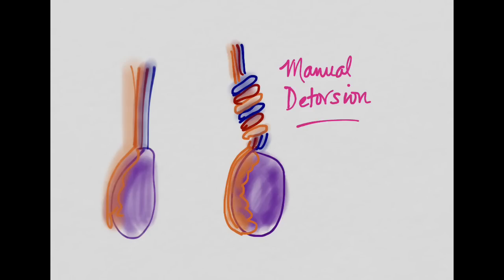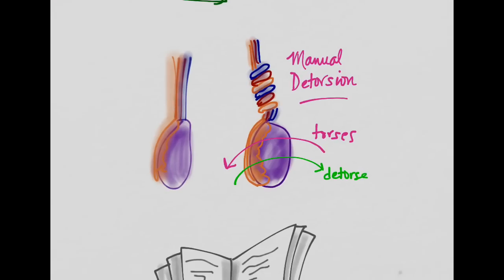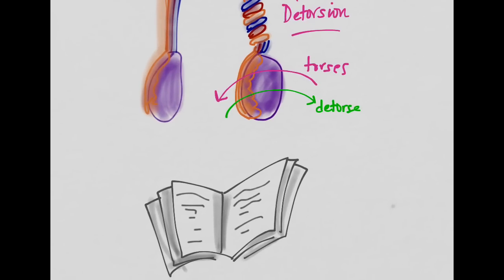Let's say here we've got two testicles, the right testicle and the left testicle. They tend to torse from lateral to medial, so this testicle tends to go this way when it torses. And so in order to untorse it, we want to go in the opposite direction. So we're going to go from medial to lateral in order to detorse this. And this is often described as opening a book. So if you look at both testicles here and you line them up with a book, when you open a book, you go that way.